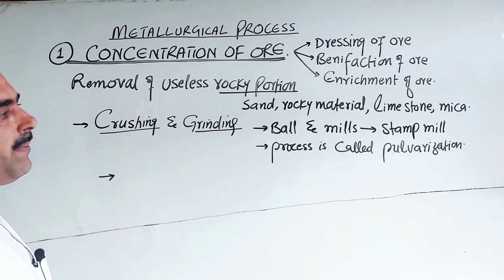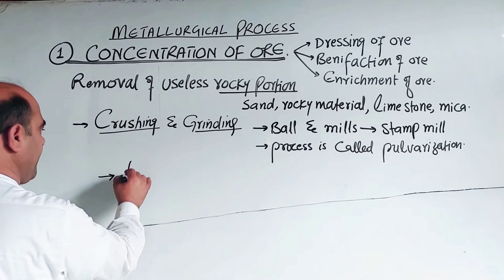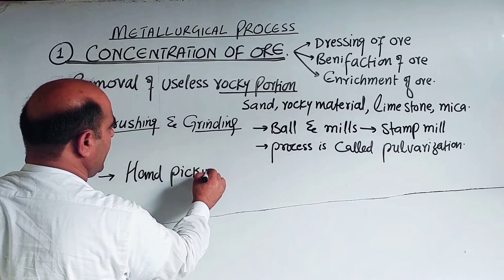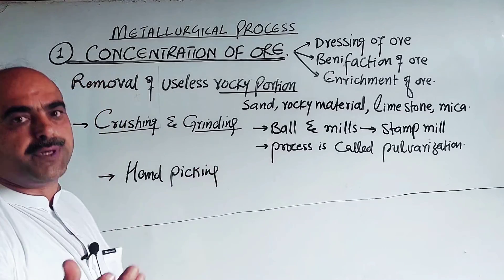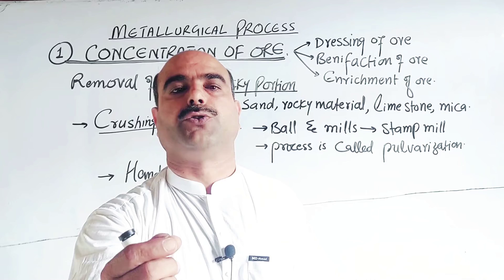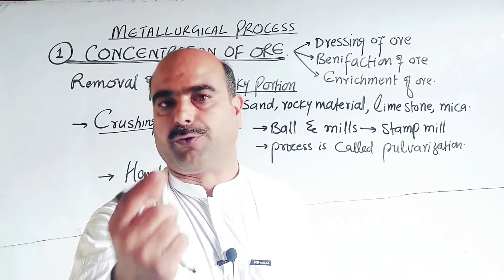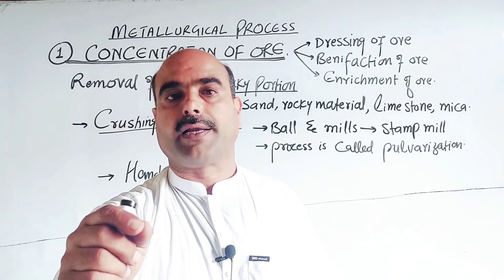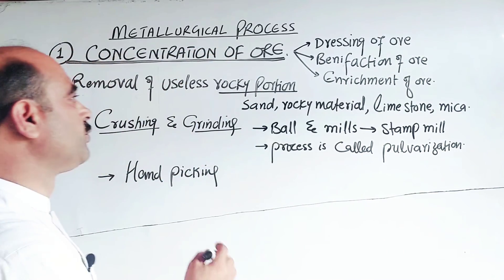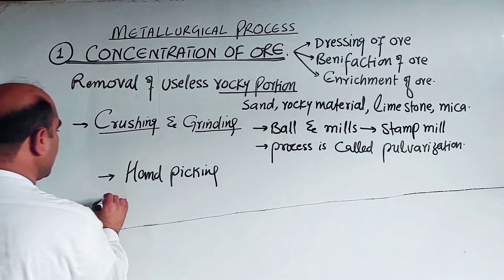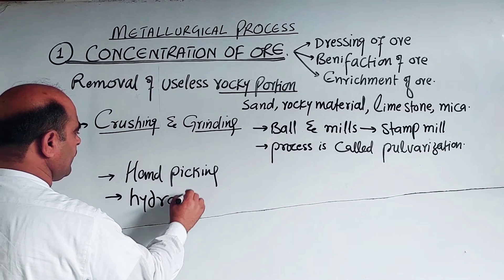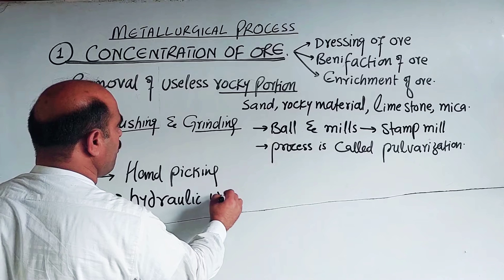After crushing and grinding, one physical method used is hand picking — manually picking and separating pieces. Another method is hydraulic washing.